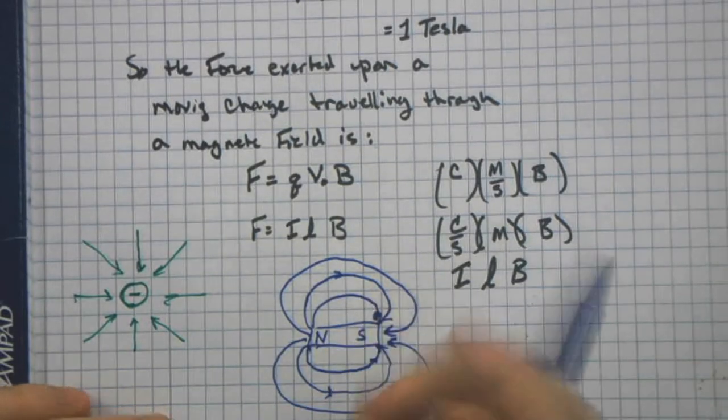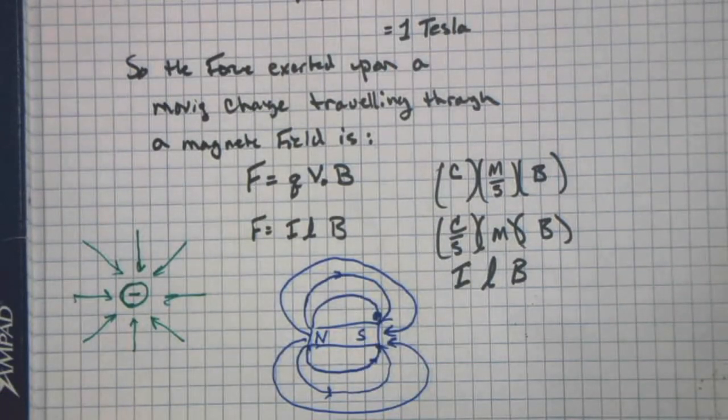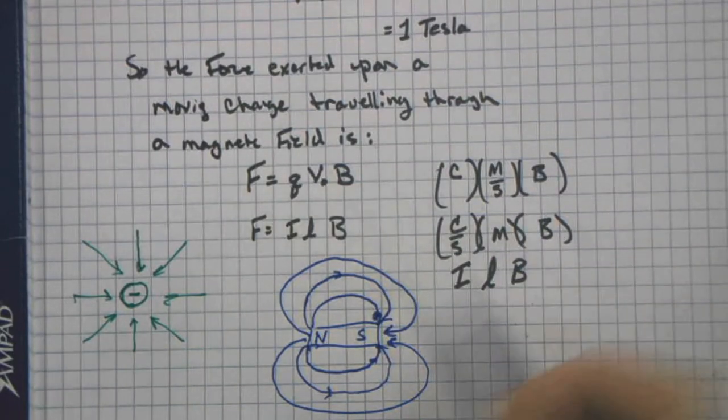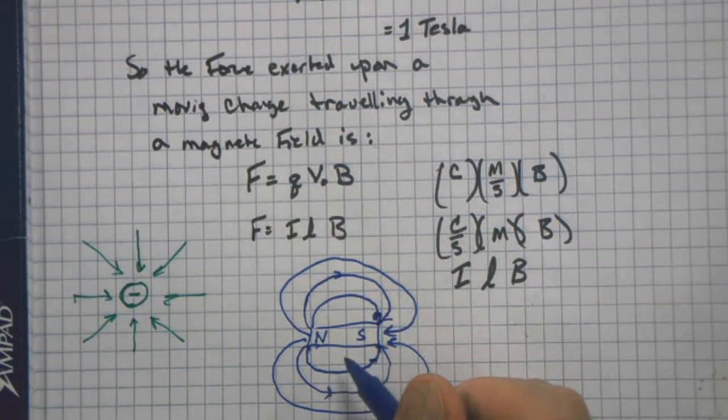And the lines go from north to south. But other than that, all the rules apply. We've talked about these lines before, where the lines never cross each other, which essentially means they're parallel to each other, except they curve. But they curve along with each other. And the more dense the lines, the stronger the field.